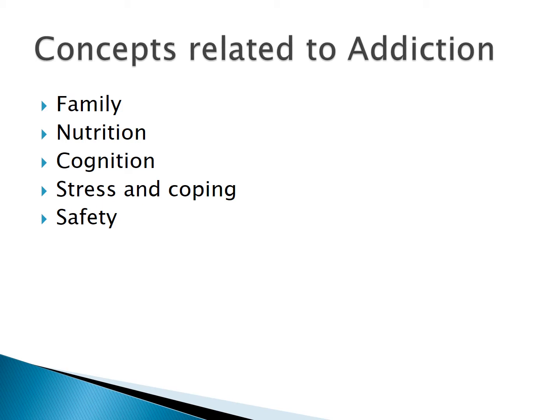Addiction does overlap with a variety of other concepts. If you take a look in your textbook on page 1523, the chart summarizes them all very nicely. Family dynamics are going to be affected. Nutrition is affected as well — this is due to altered thiamine levels, particularly with alcohol abuse. Stress and coping is going to be influenced, and this could potentially lead to violence if there are ineffective coping strategies. Safety related to high-risk behaviors and violence tendencies will also be examined.